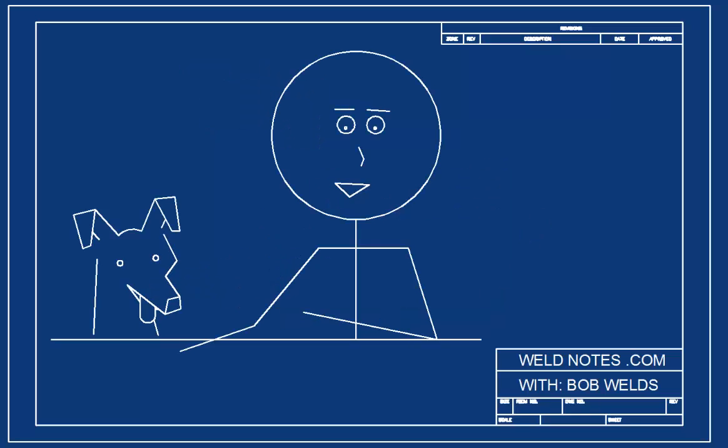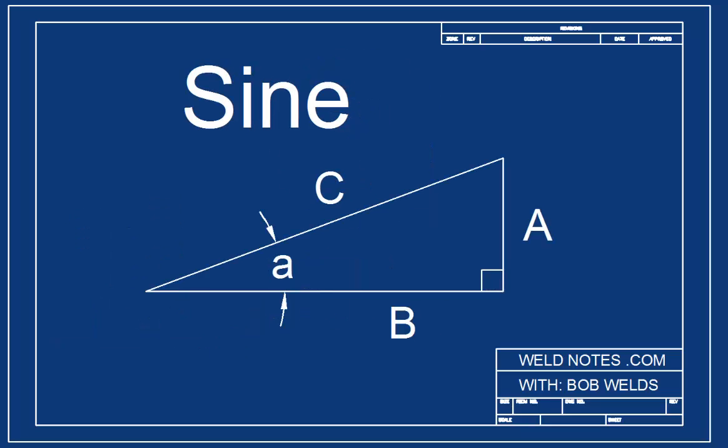Hi, I'm Bob Welds, and this is a first look at trigonometry. To keep it simple, we're only going to talk about a thing called the sine of an angle today.